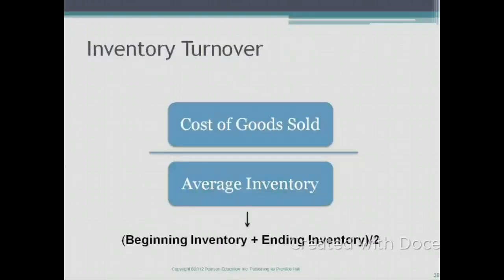The next ratio we're going to talk about is inventory turnover. Inventory turnover is calculated by dividing your cost of goods sold by your average inventory. Your average inventory is calculated by adding your beginning inventory plus your ending inventory, divided by two.